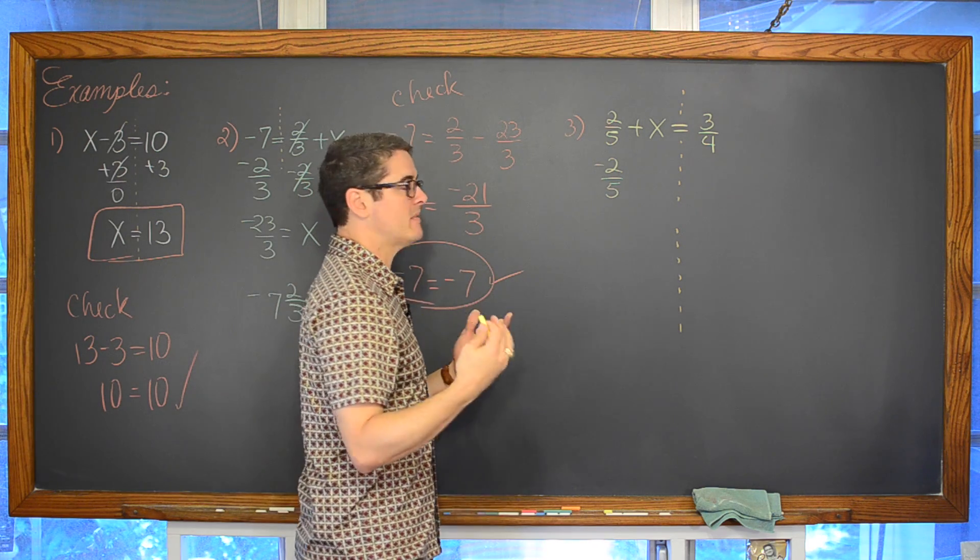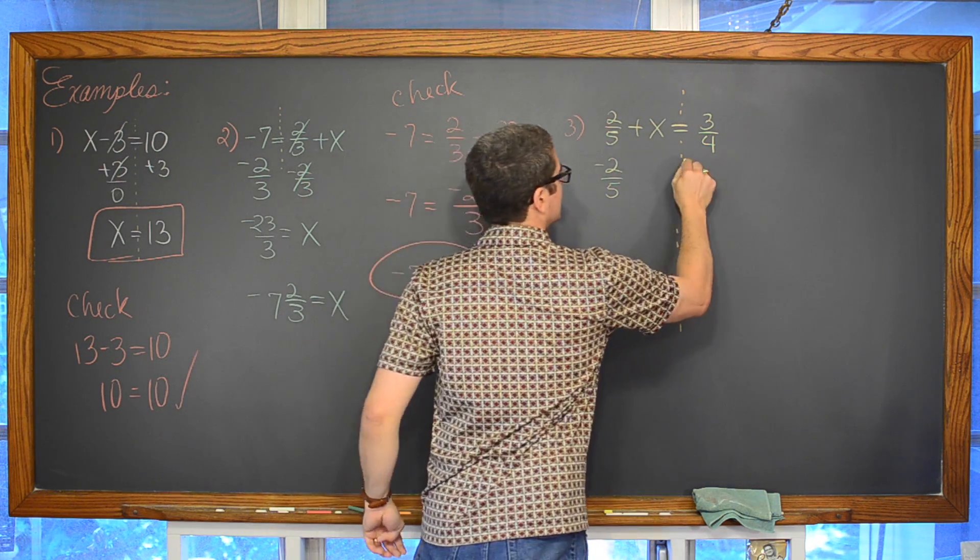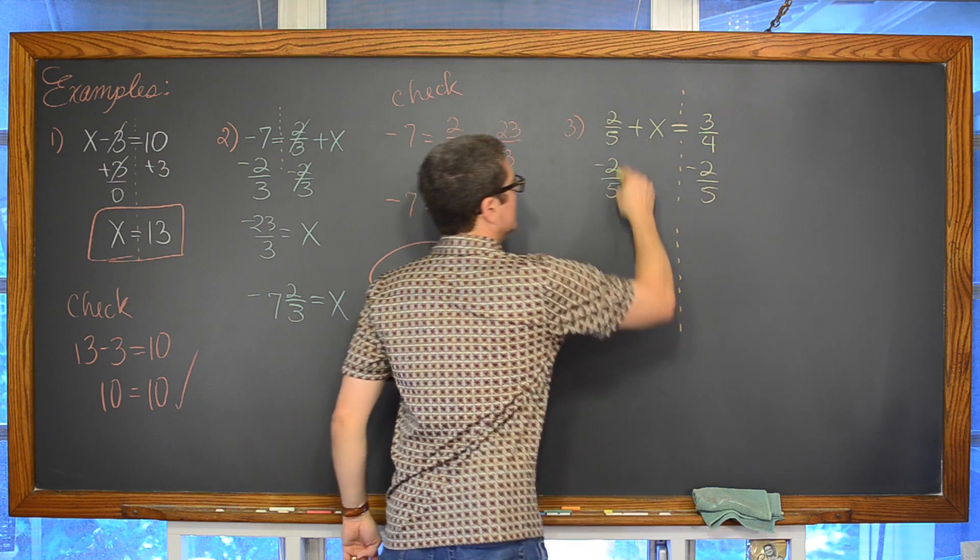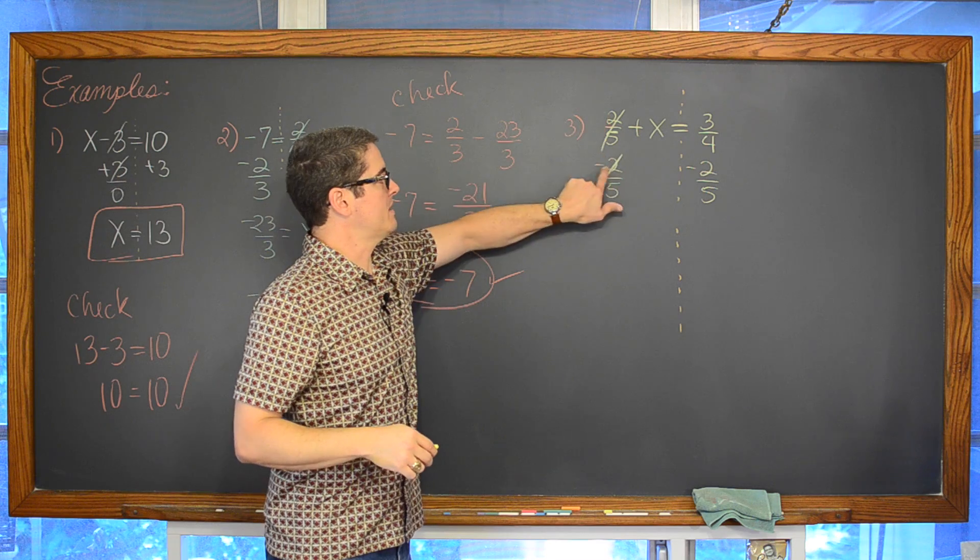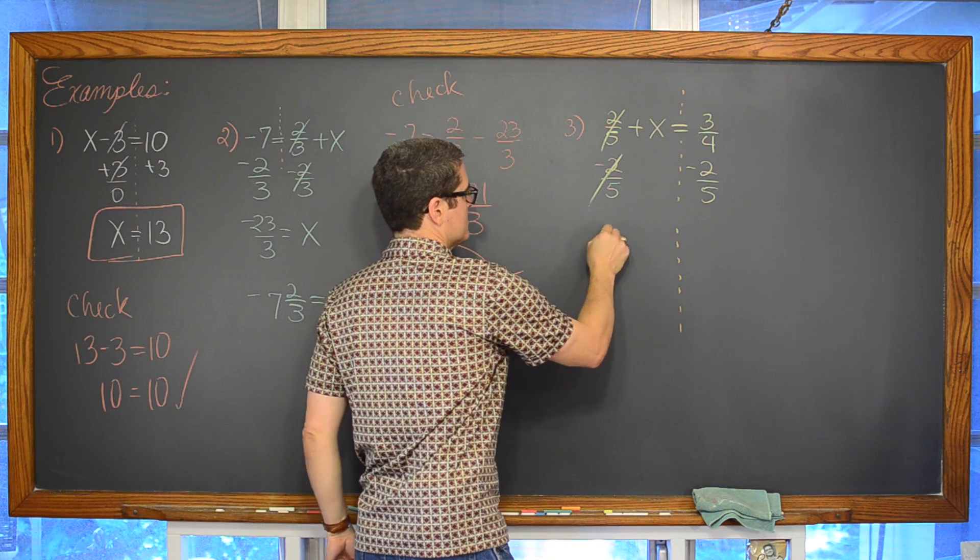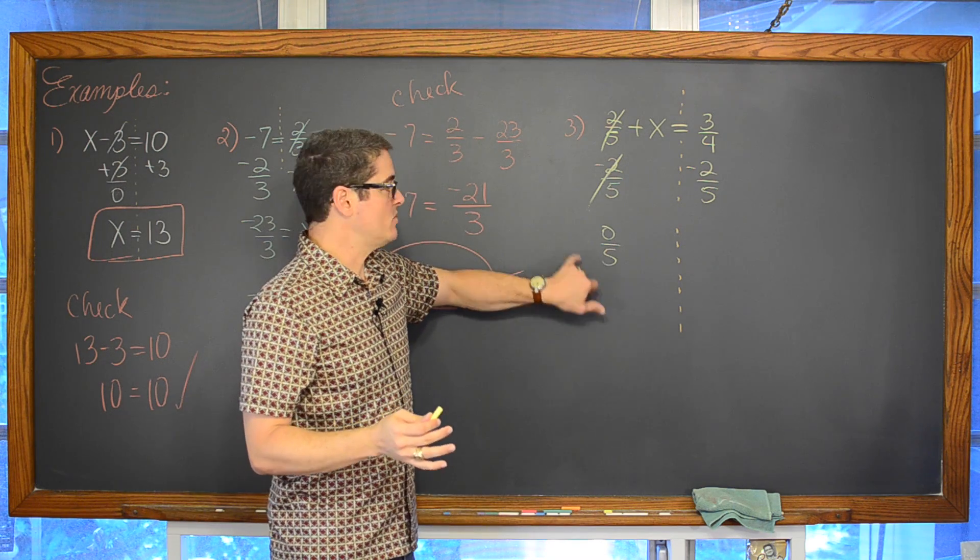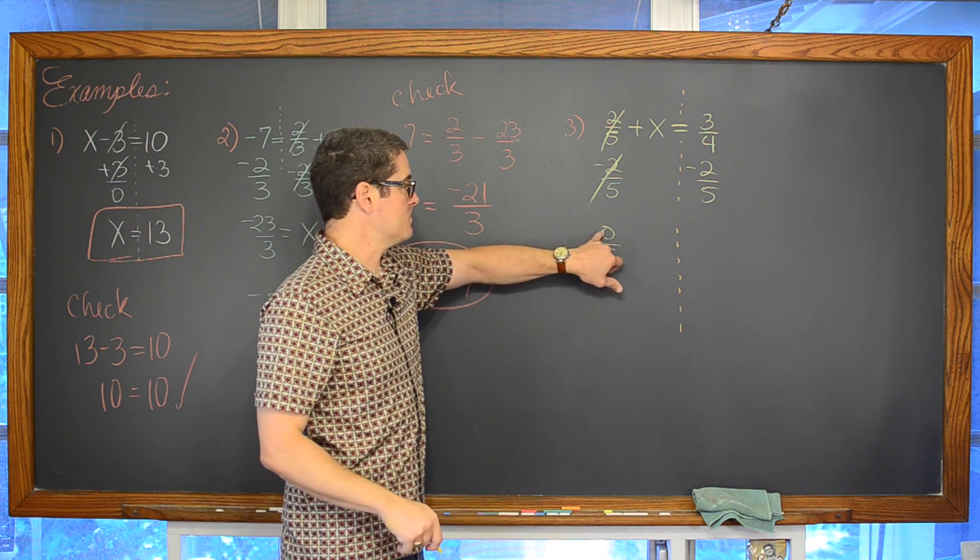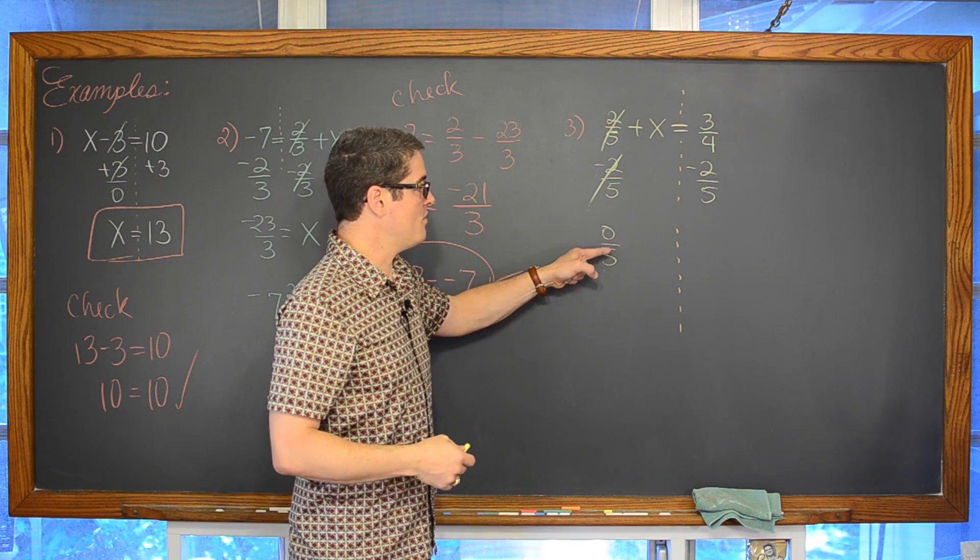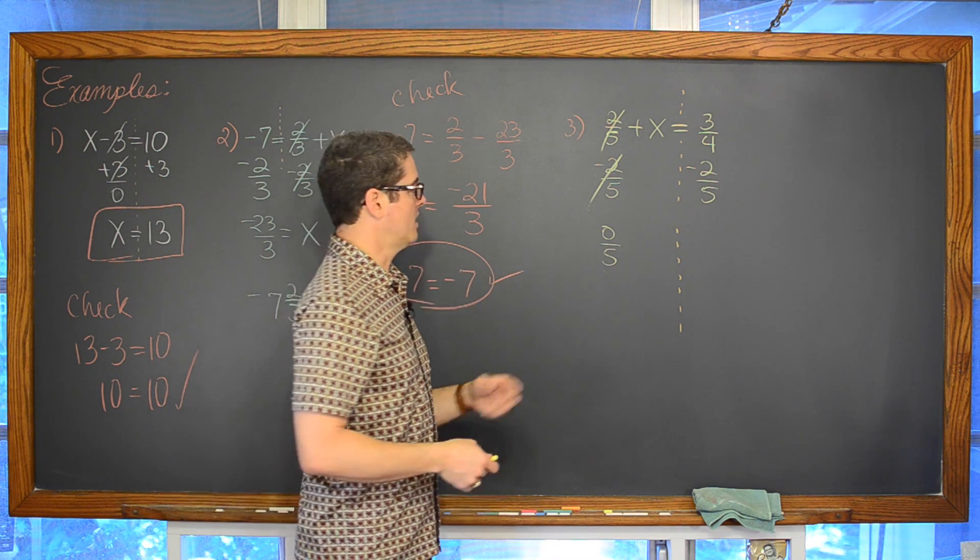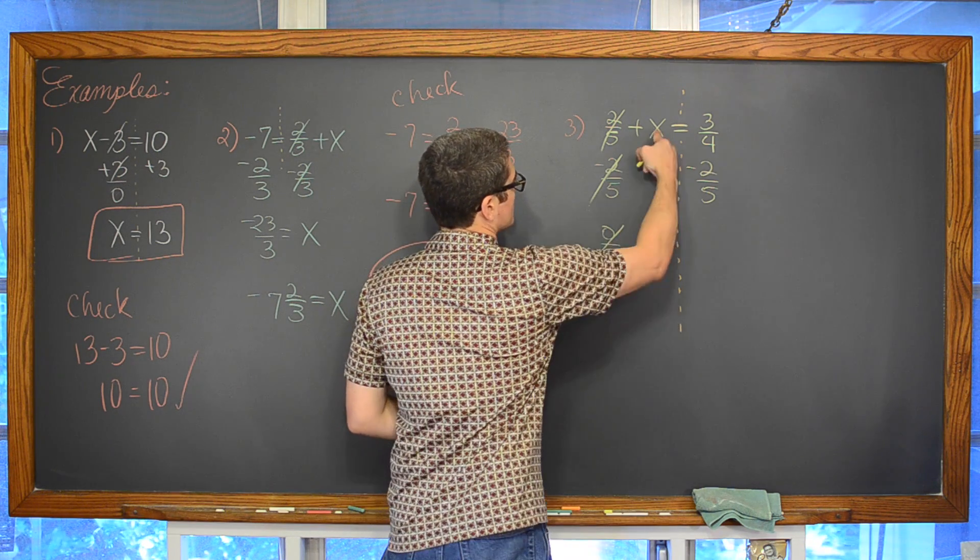So the opposite of positive 2 fifths is to subtract 2 fifths. The inverse math operation. The inverse of adding 2 fifths to x is subtracting it. Anything minus itself is 0. 2 minus 2 is 0 over 5. You cannot divide by 0, but you can divide into 0. Whenever 0 is in the numerator, that final fraction is going to be 0. But if this was 5 over 0, that would be undefined. But we can have 0 on the top. That answer is 0. So bringing down the x.